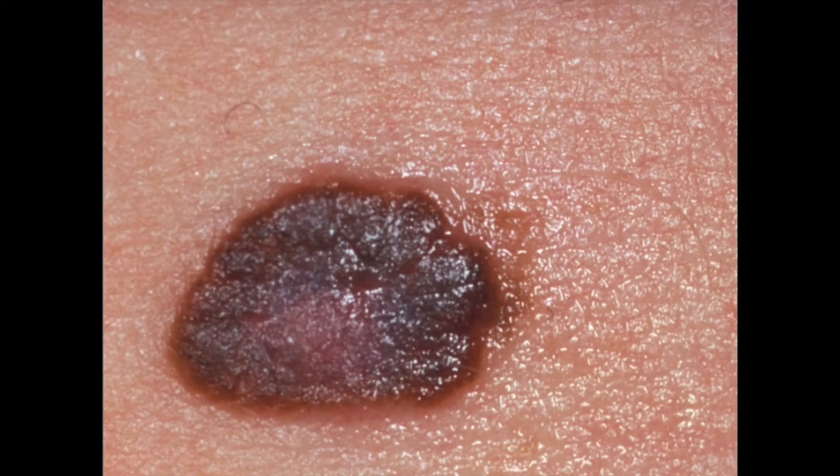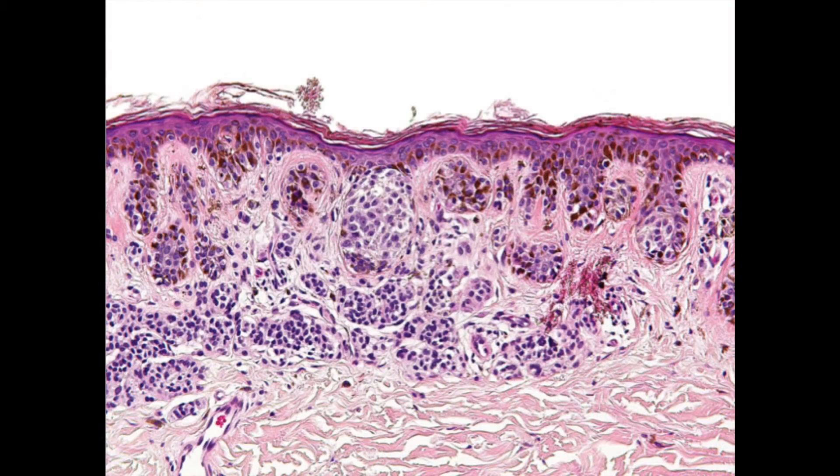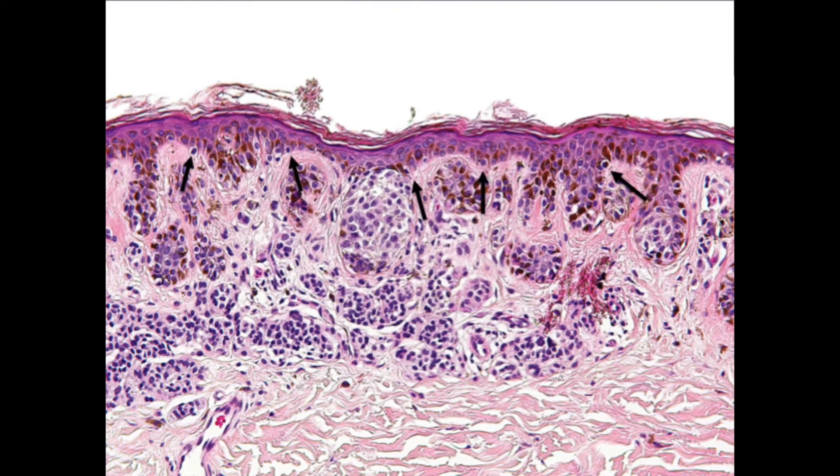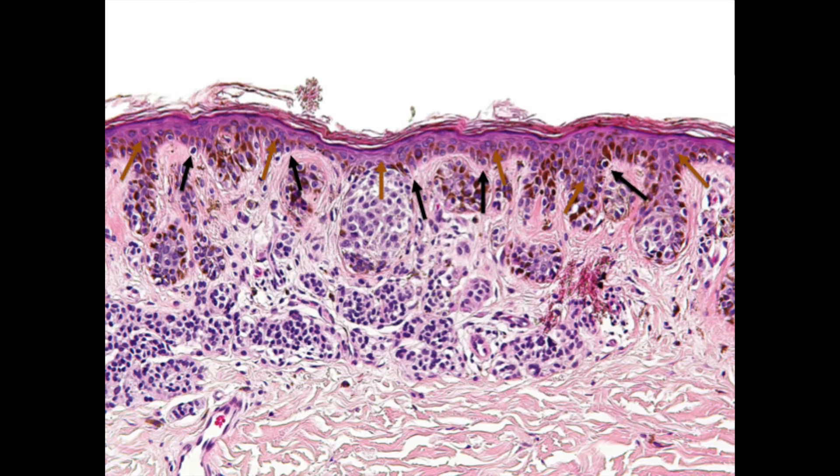But from which cells do melanoma originate? Melanomas originate from melanocytes. Melanocytes are melanin-producing cells that lay in the stratum basale, the deepest layer of the epidermis. The melanin is taken up by keratinocytes, protecting them from sun damage.